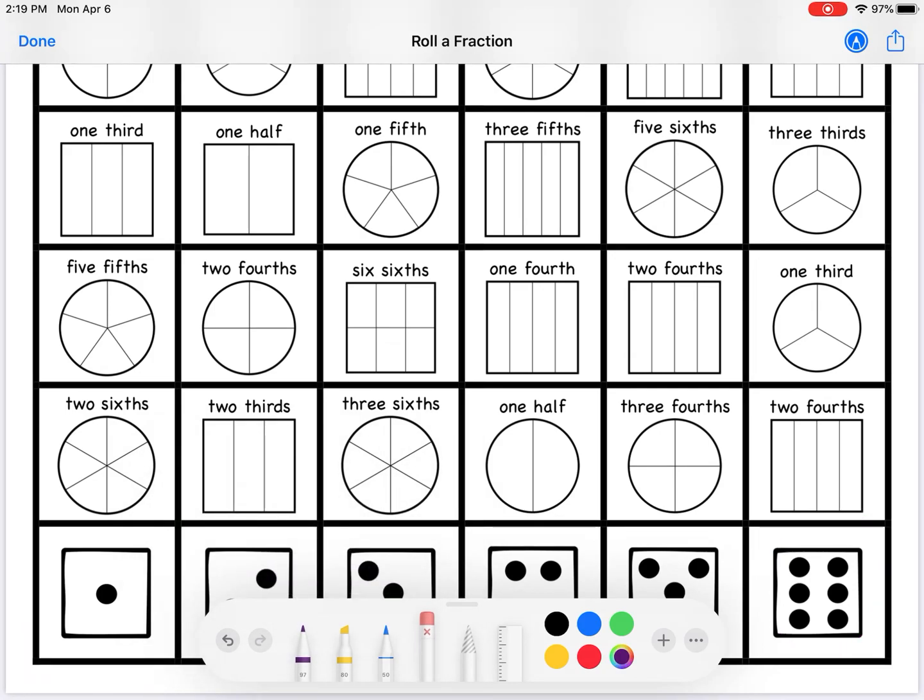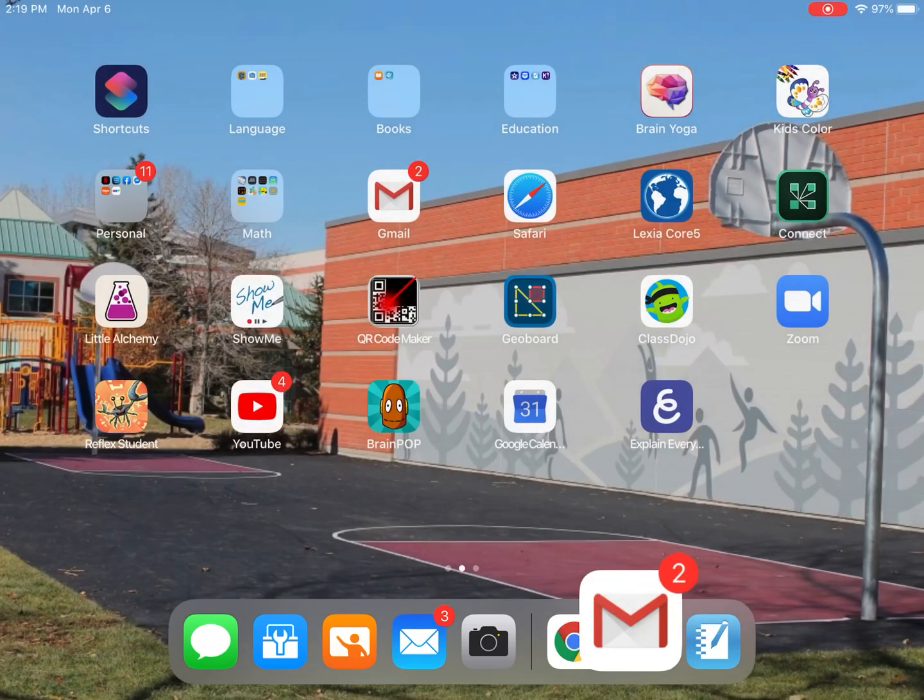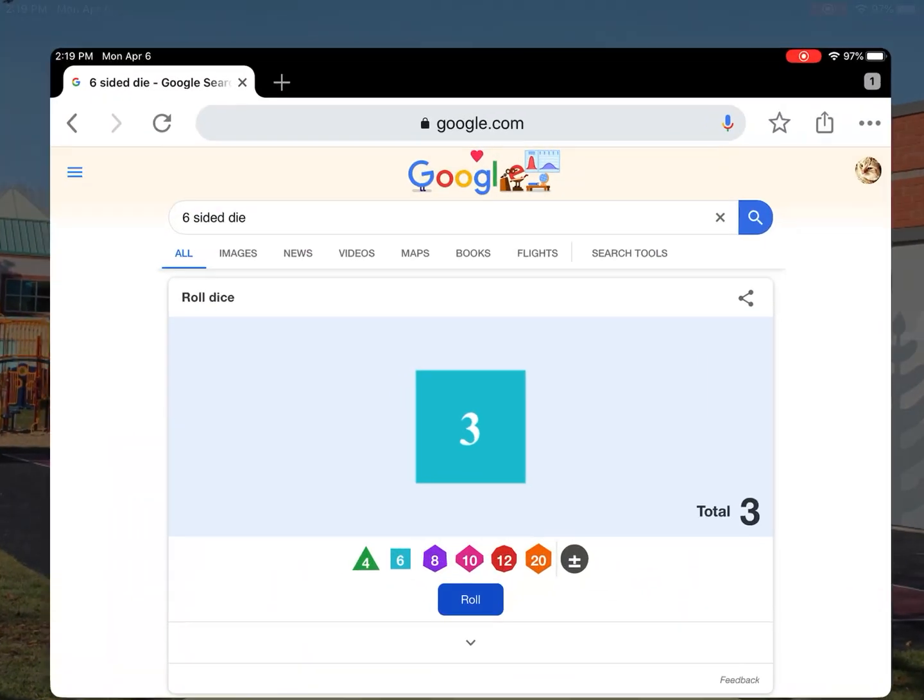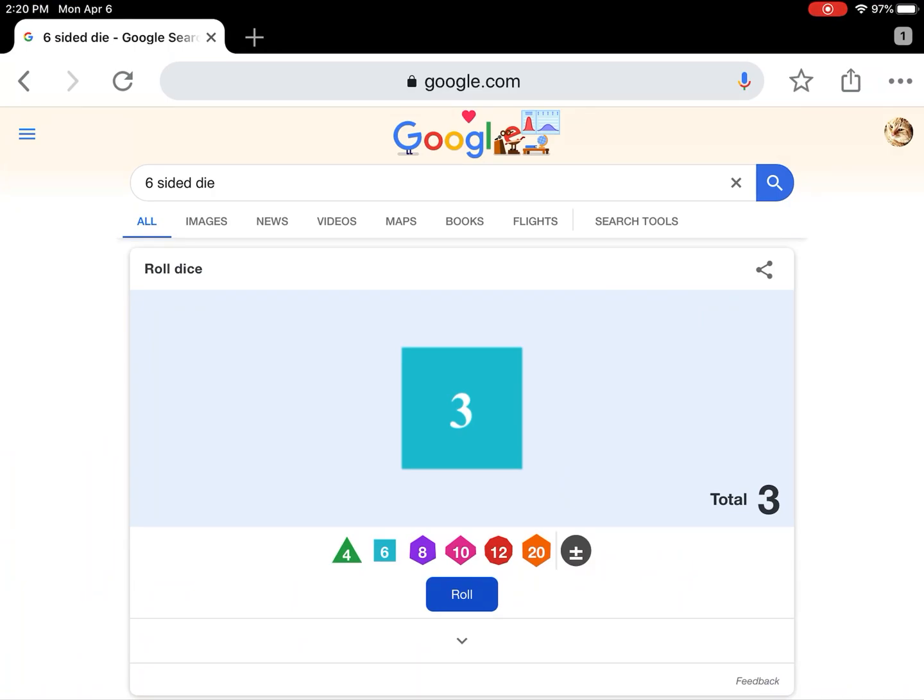I'm gonna erase that because you don't need that. Hopefully you all have a six-sided dice at home. If you don't you can go into Google and just search for six-sided die and then this will come up and then you can roll the die like that.